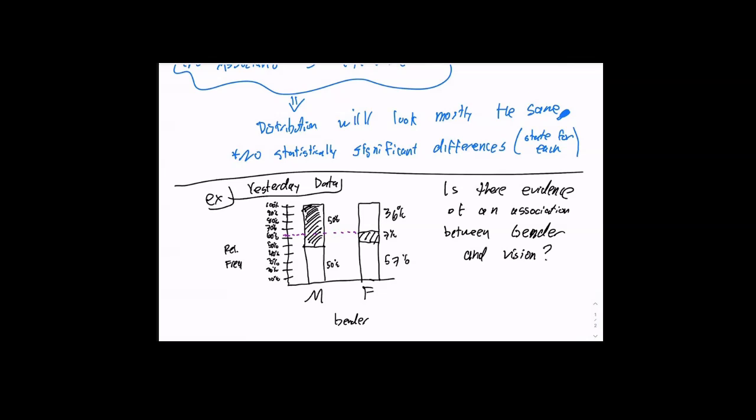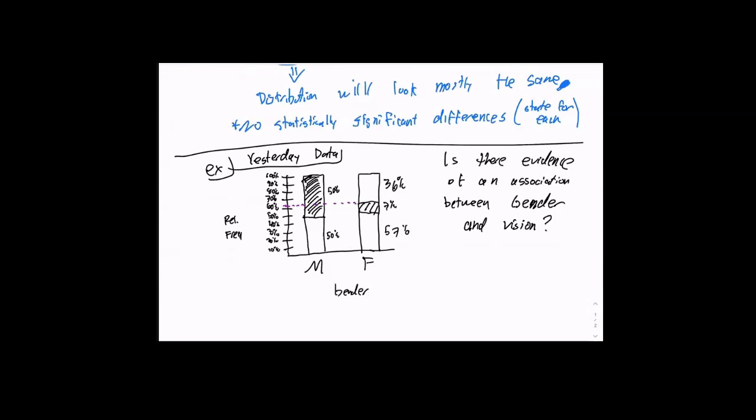Is there evidence of an association between gender and vision? More often than not, the answer is association — yes, there's an association. Because very rarely do all three graphs look pretty much identical. You're comparing apples to apples: glasses to glasses, contacts to contacts, neither to neither. You're not comparing within one same bar — that's the biggest mistake people make.